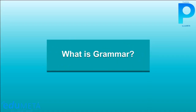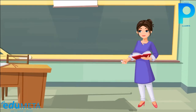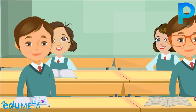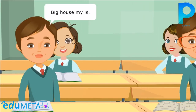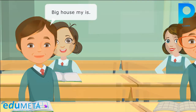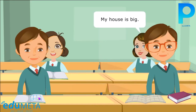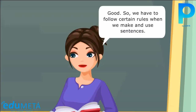What is grammar? Farhan, make a sentence using the word big. Big house my is. Wrong. My house is big. Good.